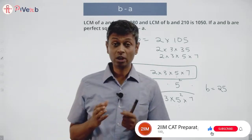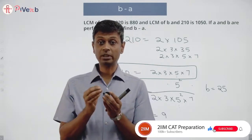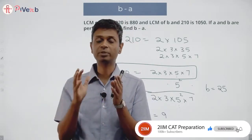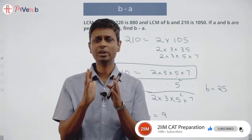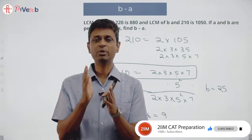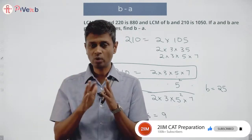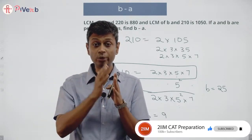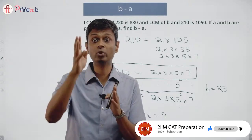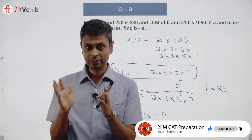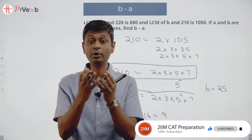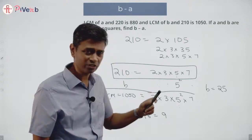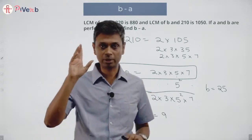The key skill here is prime factorization — the ability to look at each number as a combination of primes. 210 must be seen as 2 × 3 × 5 × 7, and 1050 must be seen as 2 × 3 × 5² × 7. When you see each number as a combination of primes, all these inferences become far simpler.